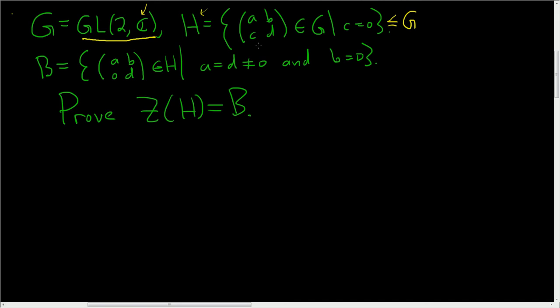Then we have H, which is actually a subgroup of G. It's not hard to show, pretty easy. This is all of the matrices in G such that c equals 0. Then we have another set B, which is actually a subset of H. This is all the matrices where the diagonal entries are equal and non-zero, so a equals d and it's not zero, and b equals zero.